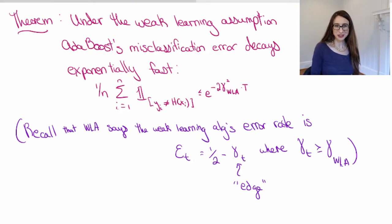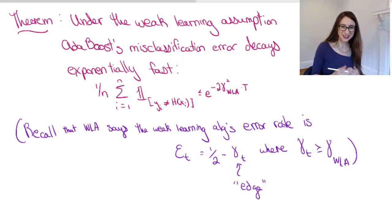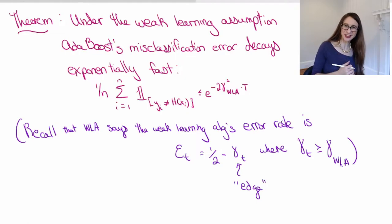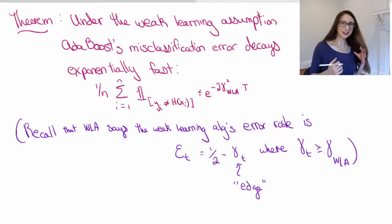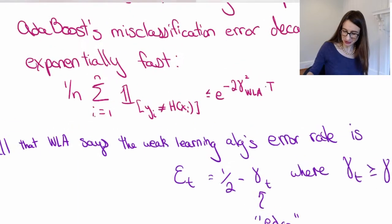Adaboost has a really interesting convergence property under the weak learning assumption, which is that its error rate decays exponentially fast. So weak learning is a lot stronger than you might actually think it is.